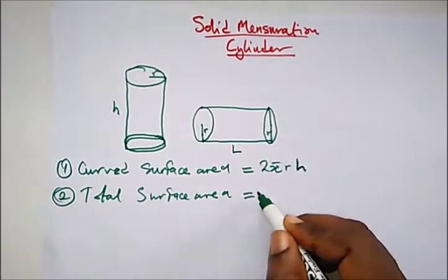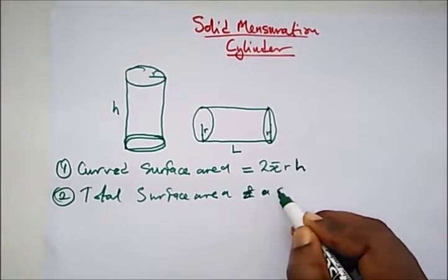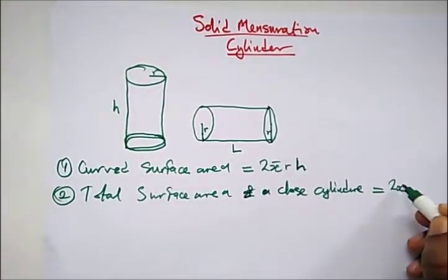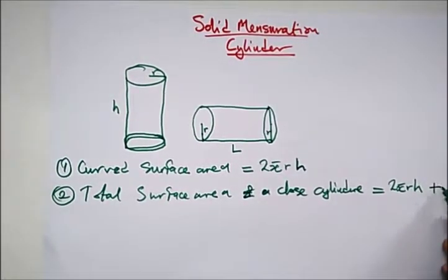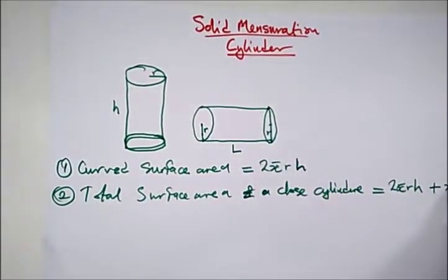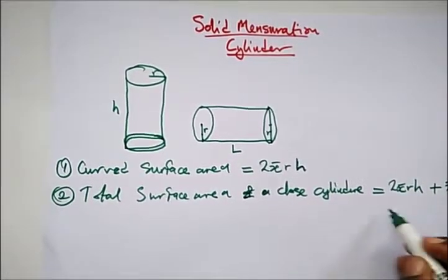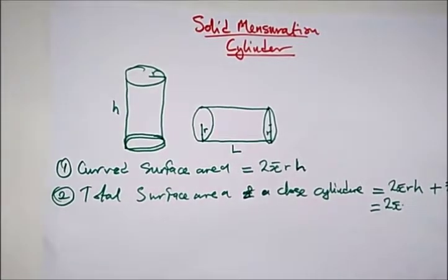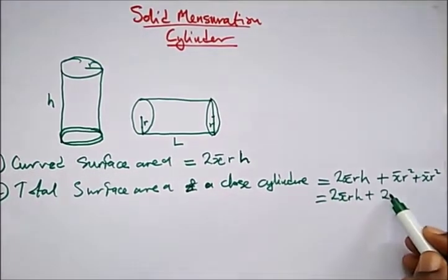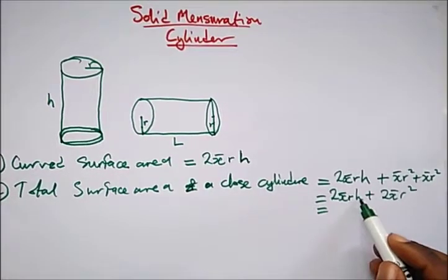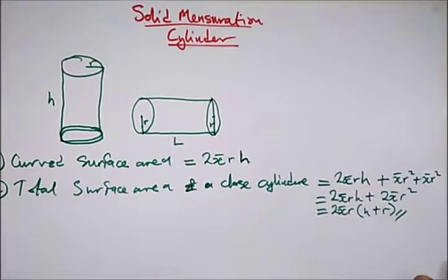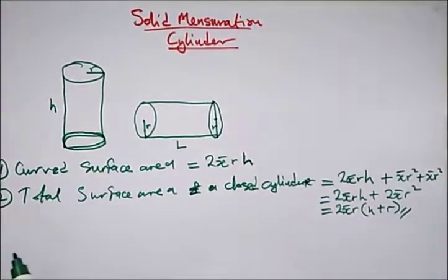If we're looking for the total surface area of a closed cylinder, it would be the curved surface area of the cylinder plus the area of the top and bottom. The area of the top is πr² plus πr², so we have 2πr². So we have 2πrh + 2πr². Where 2π and r is common, we bring it out and what's left is h + r. So this is the formula for finding the total surface area of a closed cylinder: 2πr(h + r).